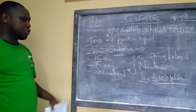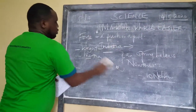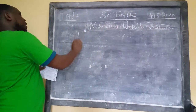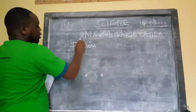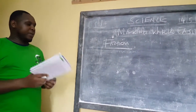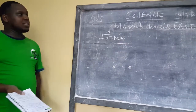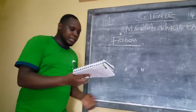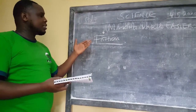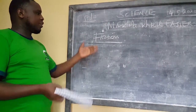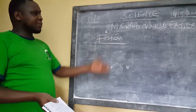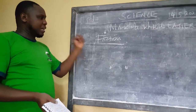I am going to now introduce today's lesson. We are going to look at friction and define what friction is. In this chapter 'Making Work Easier,' we are going to deal with: number one, friction; number two, the advantages and disadvantages of friction; and then ways of increasing and decreasing friction. This is a big chapter that requires a lot of practicals, so you will need to be ready for this.